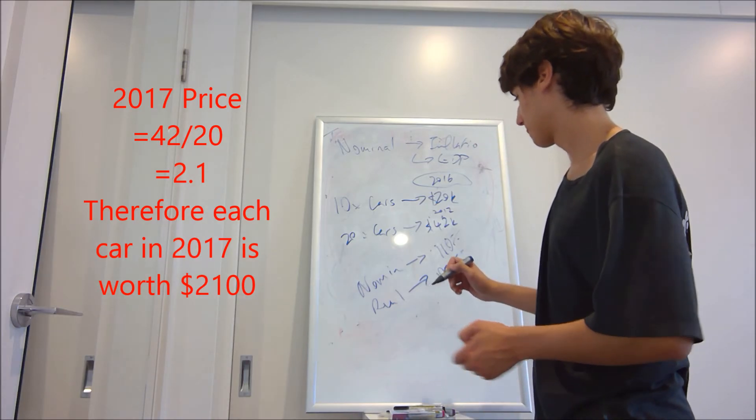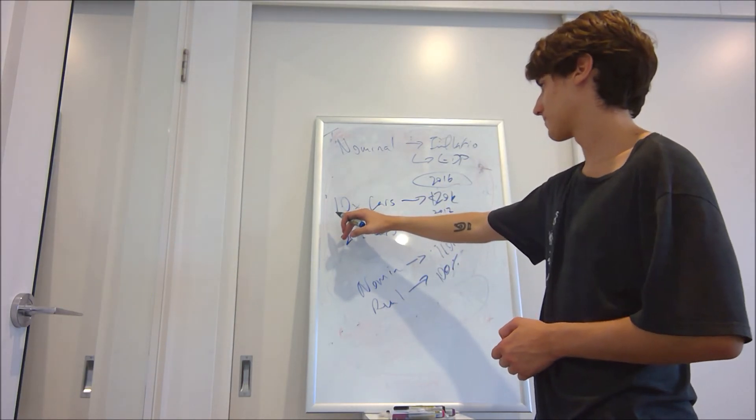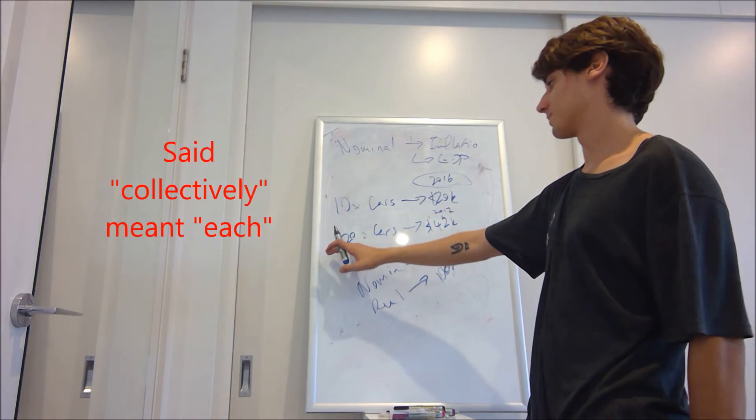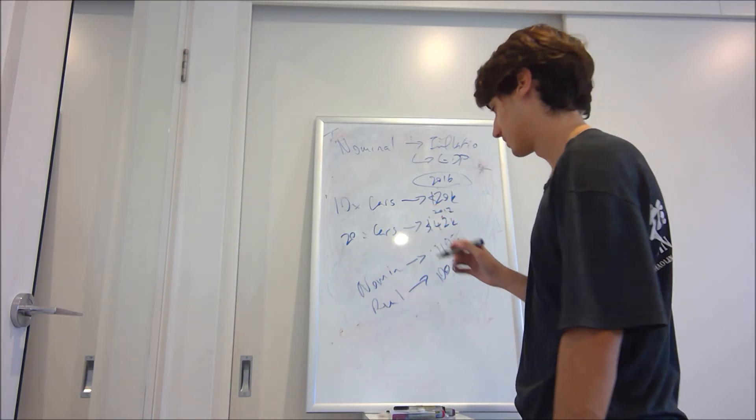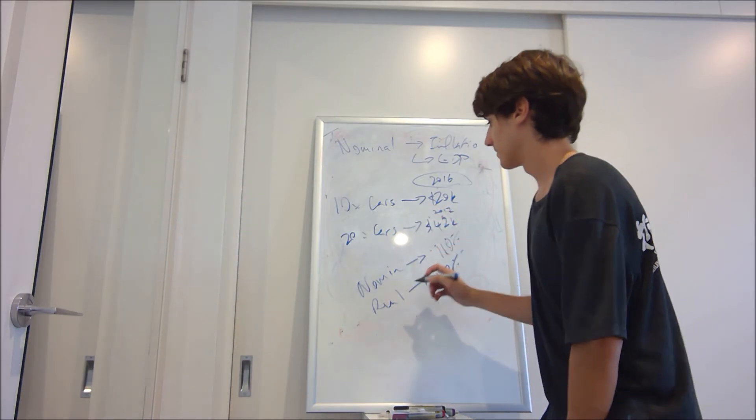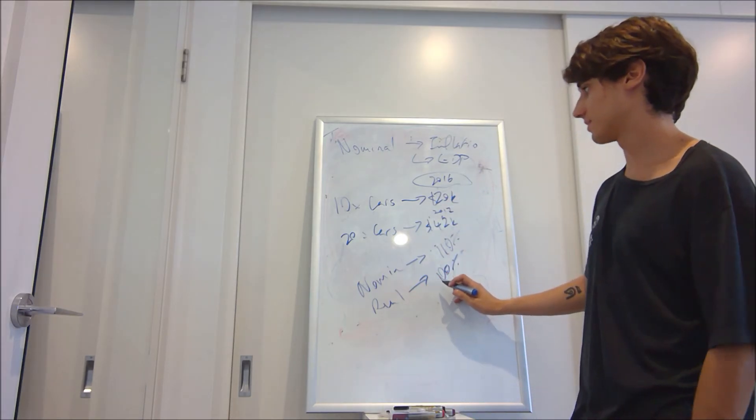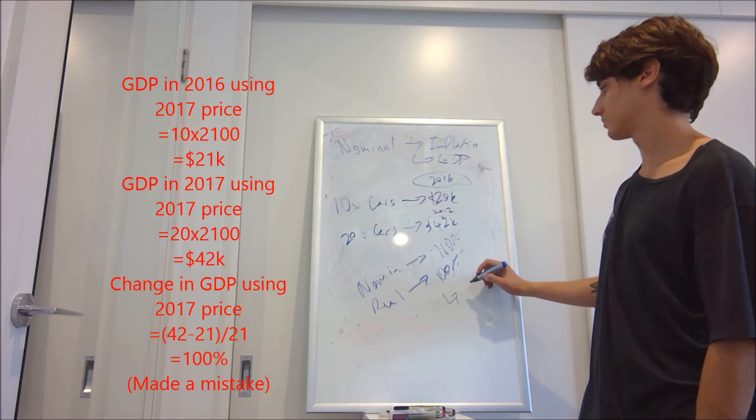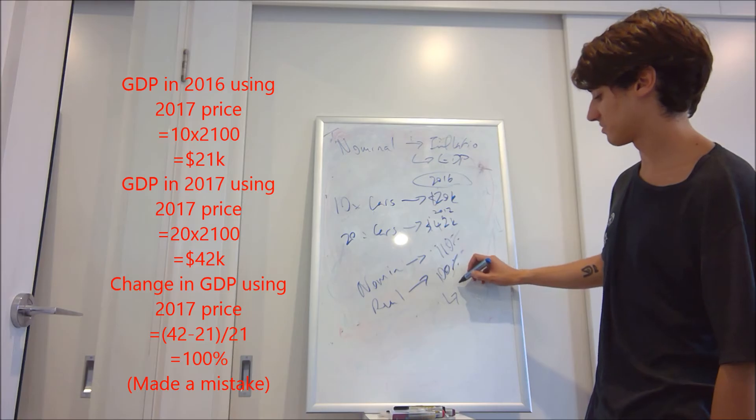Now 10 cars collectively worth $2,100 will then become 20 cars collectively worth $4,200. That just means the real GDP will increase by about 105%.